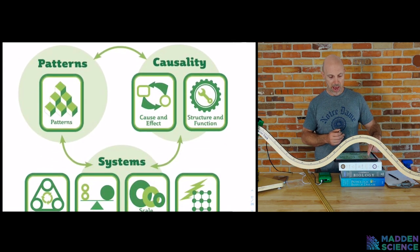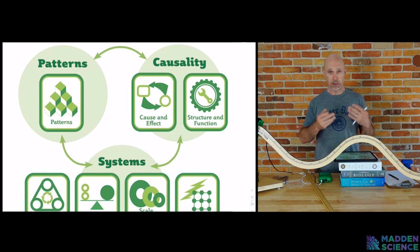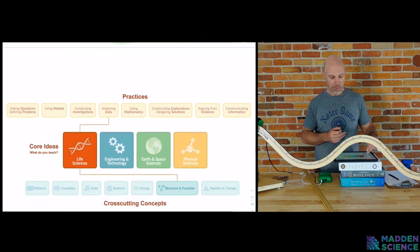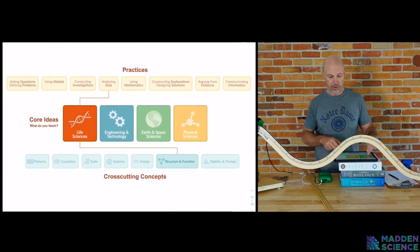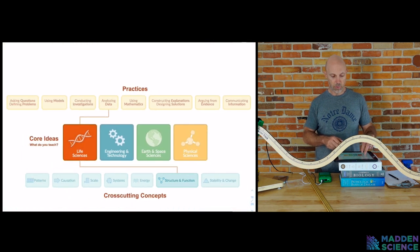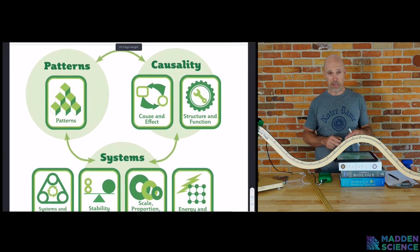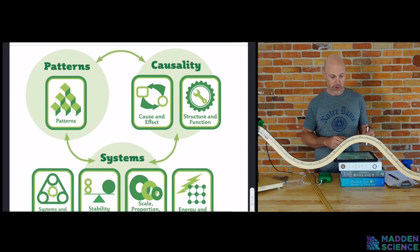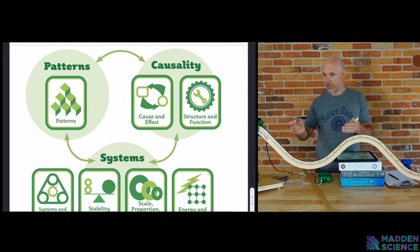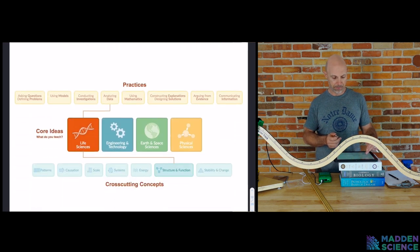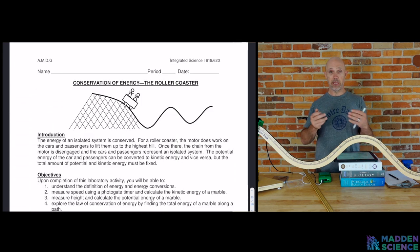Here's our NGSS patterns, causality, systems, two things we want to look at closely, pay attention to. Obviously, we are in physical sciences here. We're trying to look at energy and matter, cause and effect, but patterns. How it is that we can explain this with the formulas that we've been given? So here is the lab that we're going to run, or that I'm going to run. This is from my good friends back at St. Ignatius in Chicago. So thank you guys for this. This is how we used to run it.